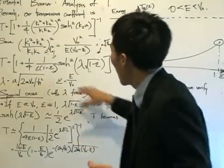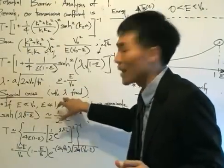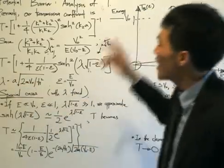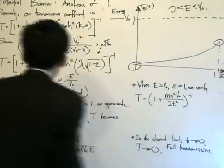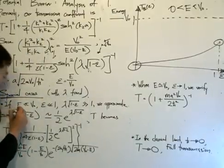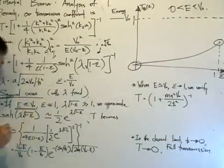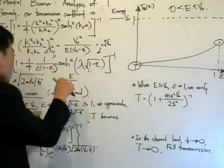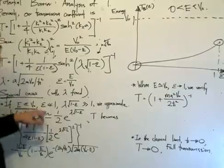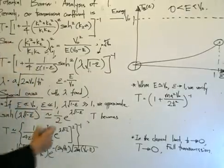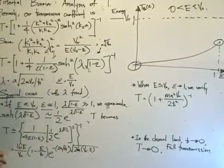Case one: let's say that the energy of the particle is much less than the potential, so E is much less than V0. When this happens, ε will be much less than one. In doing so, we see that λ multiplied by the square root of (1 minus ε) is much greater than one, because when ε is much less than one it becomes insignificant compared to one, and when we multiply the remaining factor by λ, the result is much greater than one.